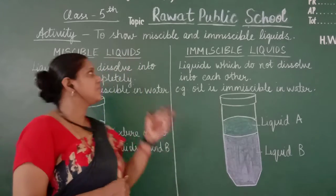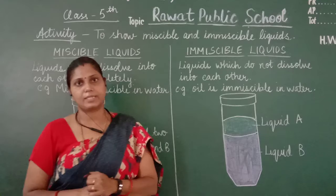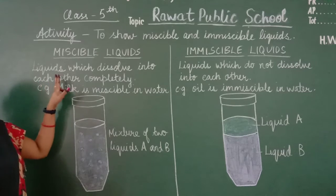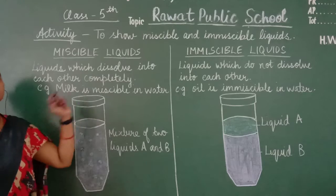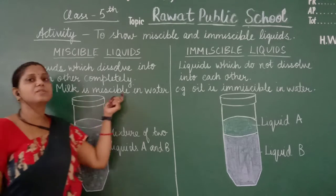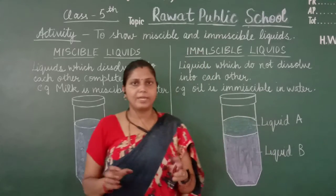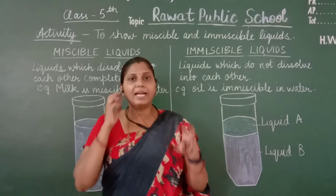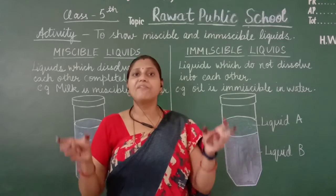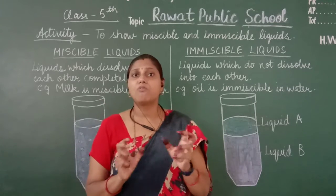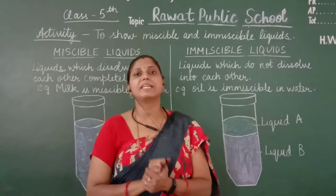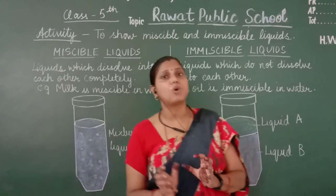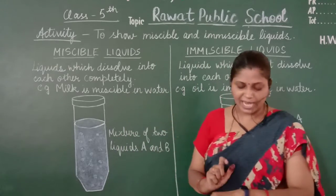We have studied about two types of liquids: miscible and immiscible liquids. Miscible liquids are the liquids which dissolve into each other completely. For example, milk is miscible in water. If we take water and milk and mix them together, the water will completely get mixed with the milk — we cannot differentiate them because those liquids dissolve into each other.